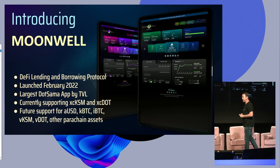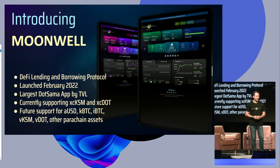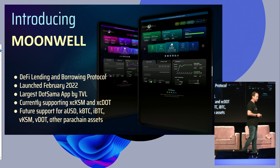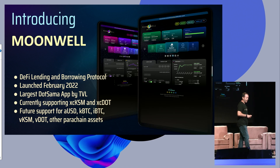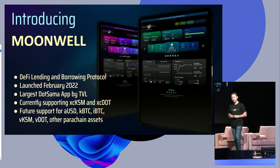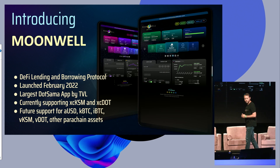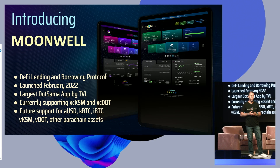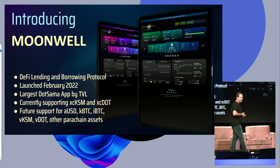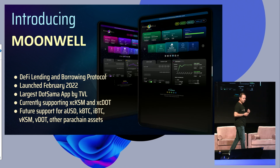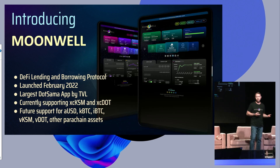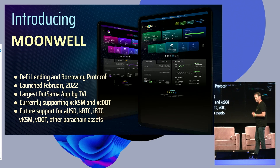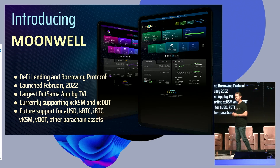We're going to lean into this really heavily — we want to bring the best assets from all the parachains to Moonwell. We want to add support for AUSD, which is Acala's fully collateralized stablecoin, similar to MakerDAO. We're excited about this because it's one of the first native stablecoins in the Dotsama ecosystem. We also see the Interlay team building IBTC, and we'd love to support IBTC as a collateral asset on Moonwell. If you're building a parachain or building assets on a parachain, we'd love to talk and figure out a way to list your asset on Moonwell.